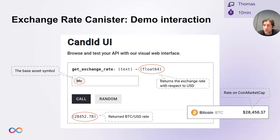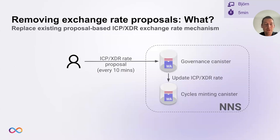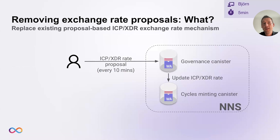That is all I wanted to show. I'll hand over now to Björn, who will tell us a bit about the implications for the NNS. Thank you, Thomas. This is Björn, with research at DFINITY, focusing on governance and tokenomics. This exchange rate canister is a very cool feature, and it can be used to simplify the NNS — in particular, to remove exchange rate proposals. The overall idea is to replace the current existing proposal-based mechanism. Every 10 minutes, a proposal for updating the ICP-XDR exchange rate is submitted to the governance canister. Once it is settled, the governance canister updates the exchange rate in the cycle-minting canister.